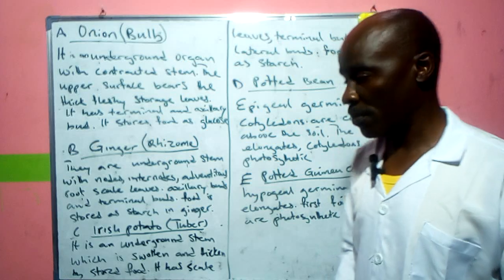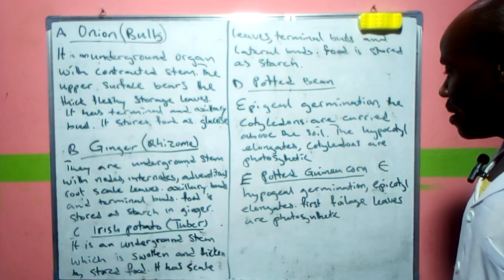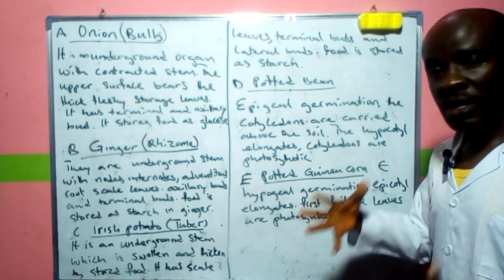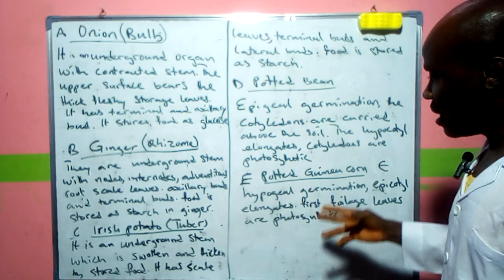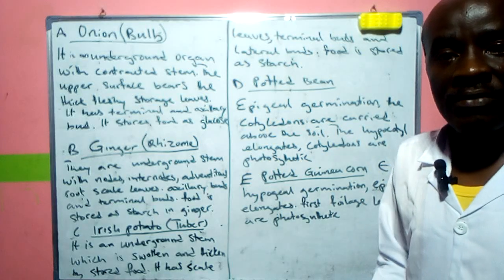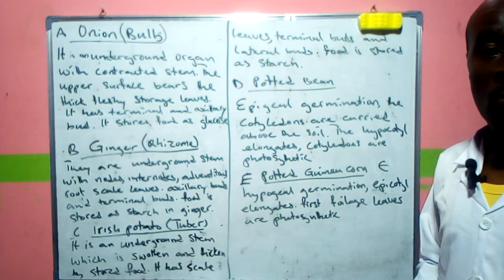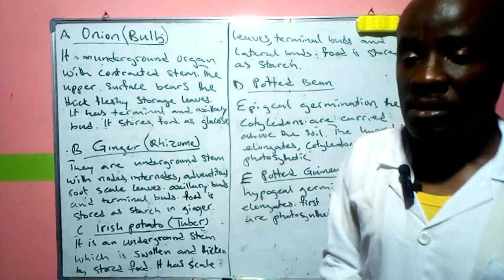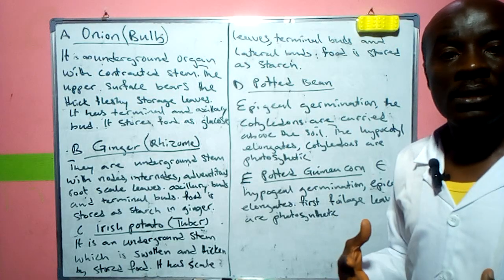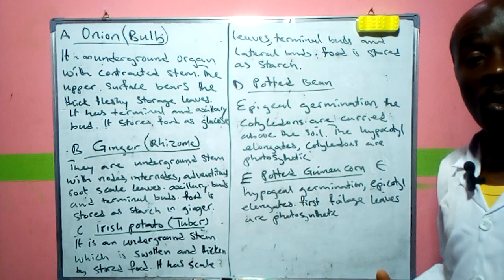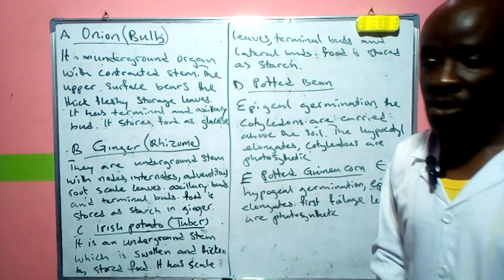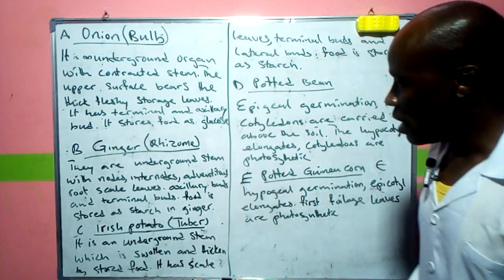Once the cotyledons come out, they eventually dry up as their food content is used up. Guinea corn, on the other hand, has hypogeal germination, which results from the epicotyl elongating faster than the hypocotyl. As a result, the foliage leaves are lifted up, and the first foliage leaf does the work of photosynthesis. This type is common in monocots, while epigeal germination is common in dicots.